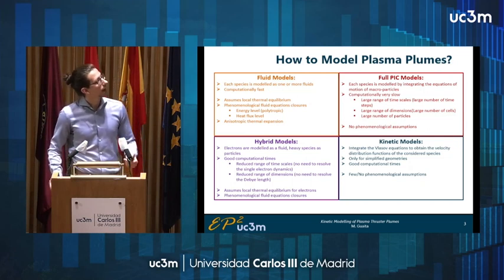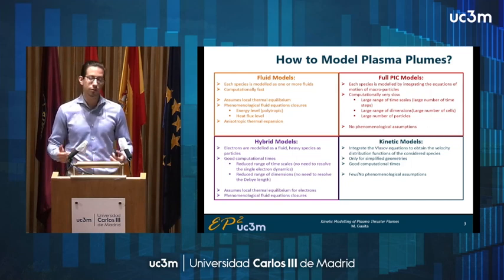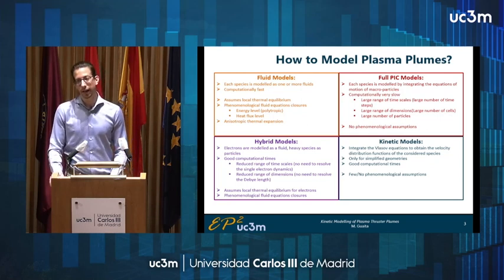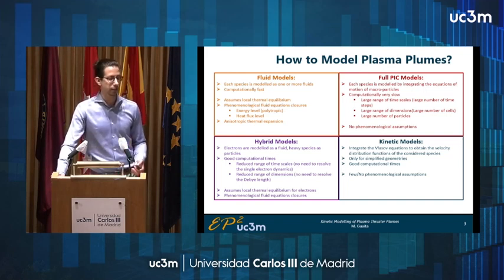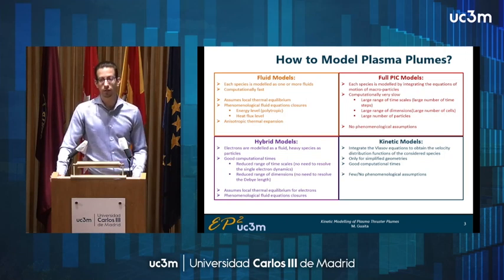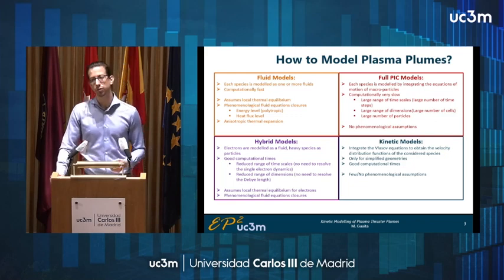A final type of model are kinetic models. In this case we are integrating the velocity equations to obtain the velocity distribution functions of all of the species inside the plume. By taking the moments of the velocity distribution function we find the macroscopic plasma quantities. While these models are computationally quite fast and require few to no assumptions a priori, they are only valid for very simplified geometries, which means they are hardly usable for real life scenarios.